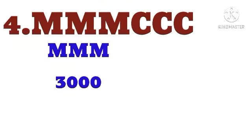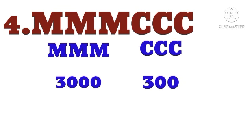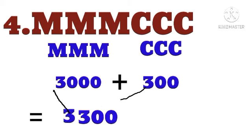Three M's means 3000, three C's means 300. So 3000 plus 300 equals 3300.